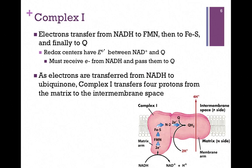Let's look in greater detail at Complex 1. It's going to initially receive electrons from NADH, as illustrated here, and eventually pass them to Q to form ubiquinol, QH2. It goes through a series of redox centers: initially transferred to flavin mononucleotide, or FMN, then to an iron-sulfur center, and finally to Q.